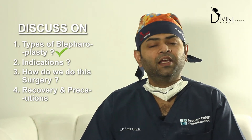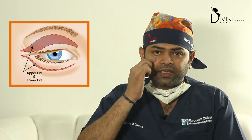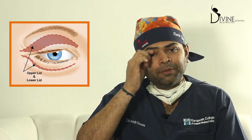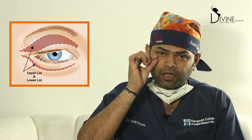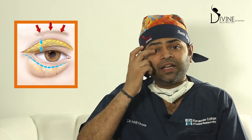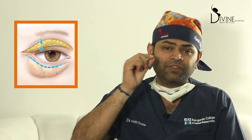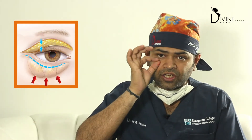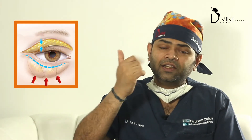The types are upper lid and lower lid blepharoplasty. If a patient has extra skin on the upper eyelid, we do upper lid blepharoplasty. If they have extra skin on the lower eyelid, we do lower lid blepharoplasty. For the lower lid, there are two ways of doing it.